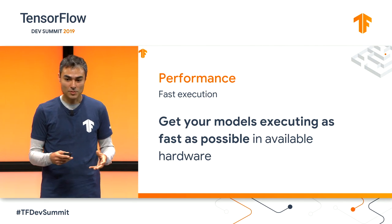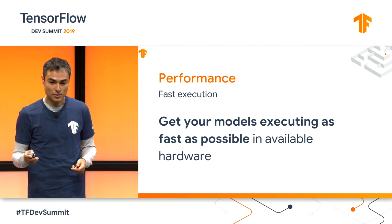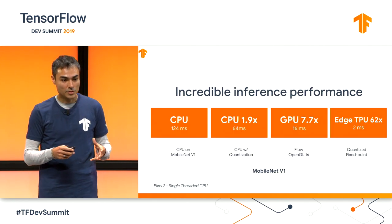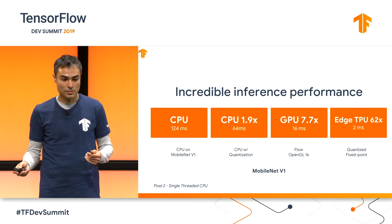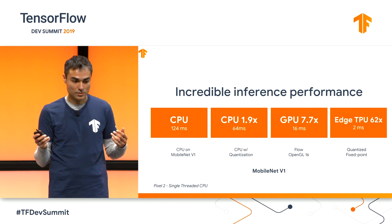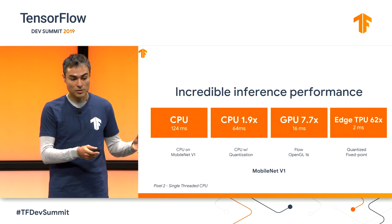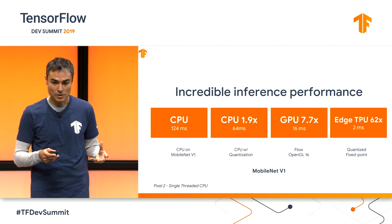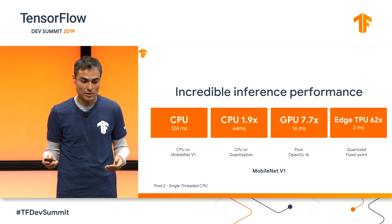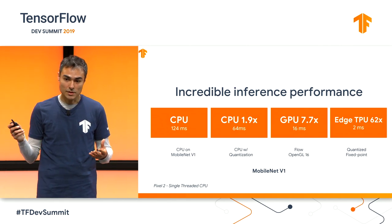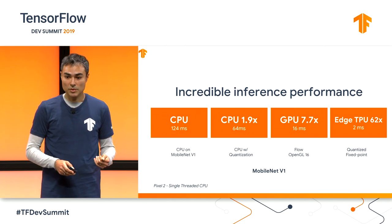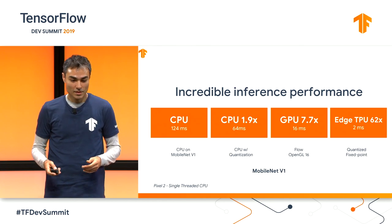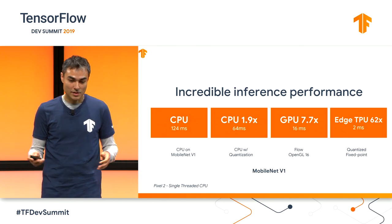The next theme is performance — we want your models to execute as fast as possible in the hardware you have available. For example, with MobileNet V1, the execution in CPU floating point compared to the quantized version in CPU already shows improvement, and with the recently launched GPU delegate developer preview, we get over 7x improvements. By using the Edge TPU delegate, we get 62x speedups. This is an area we're working really hard on, and we have a very nice benchmark and profiling tool, along with a few delegates.